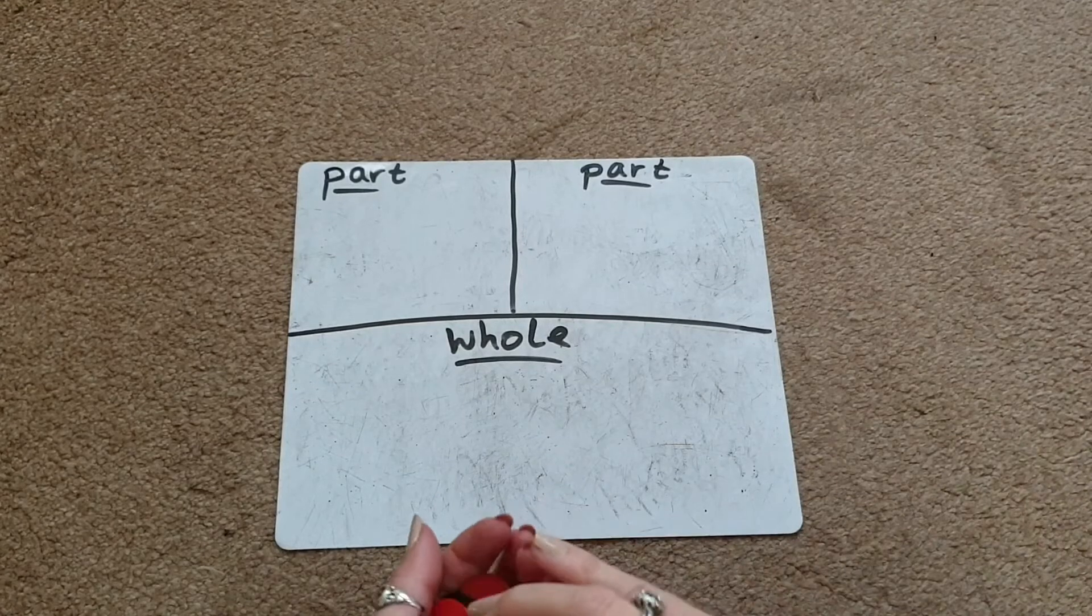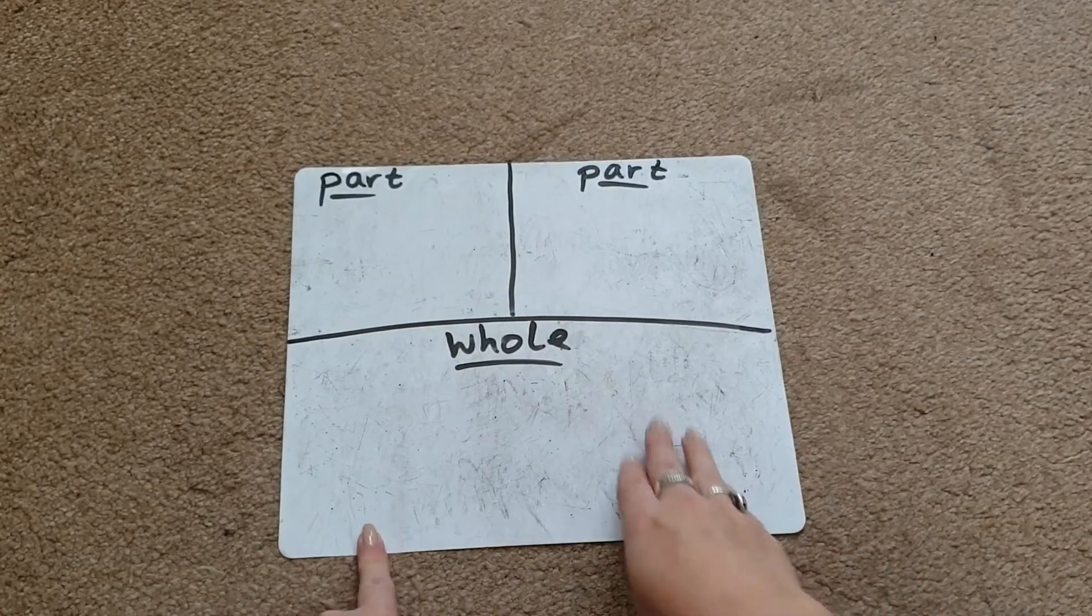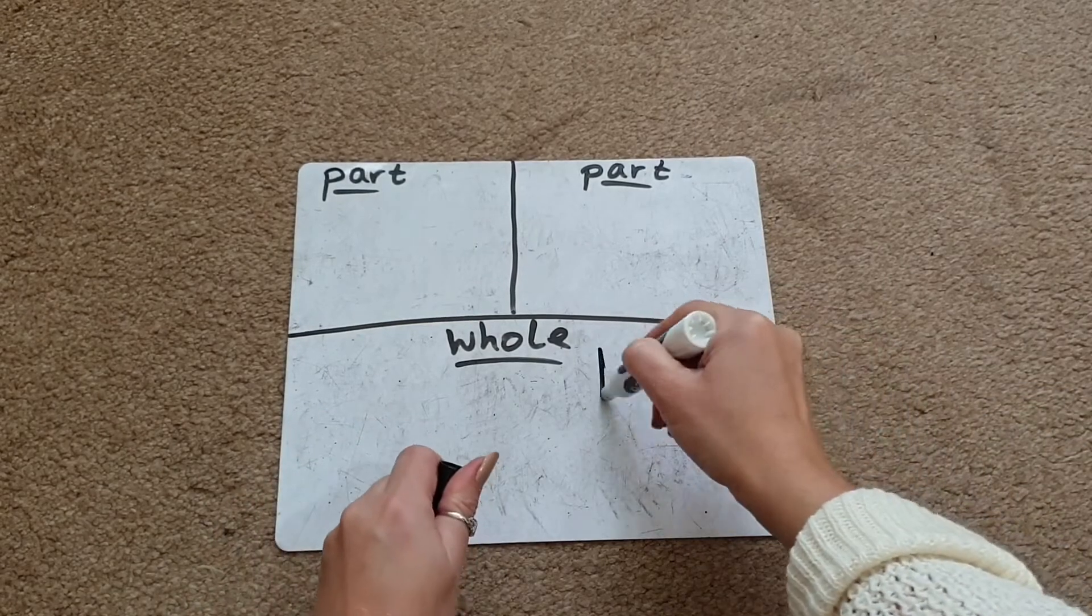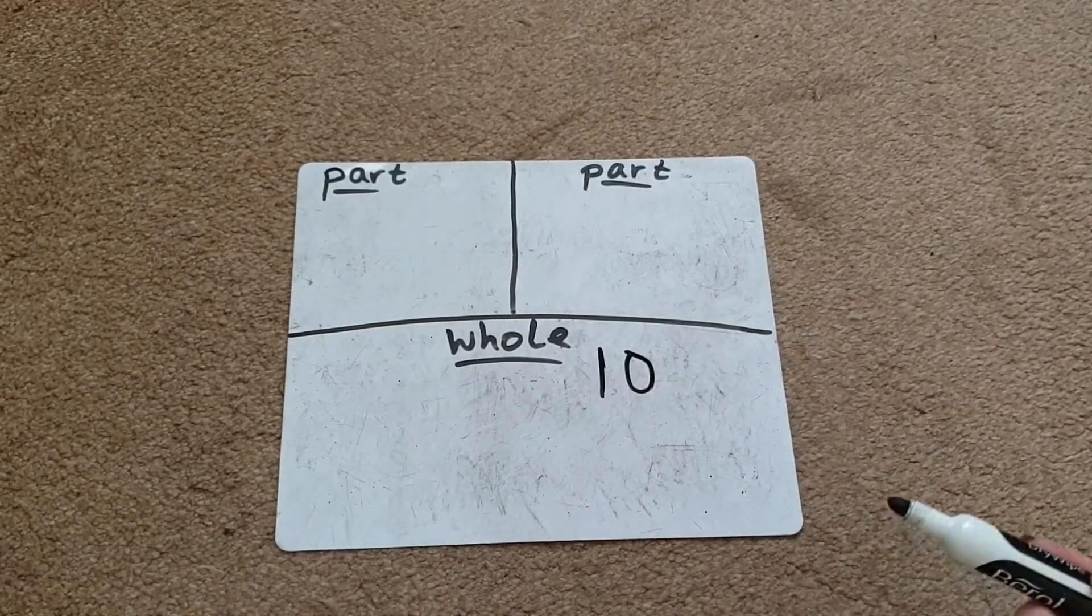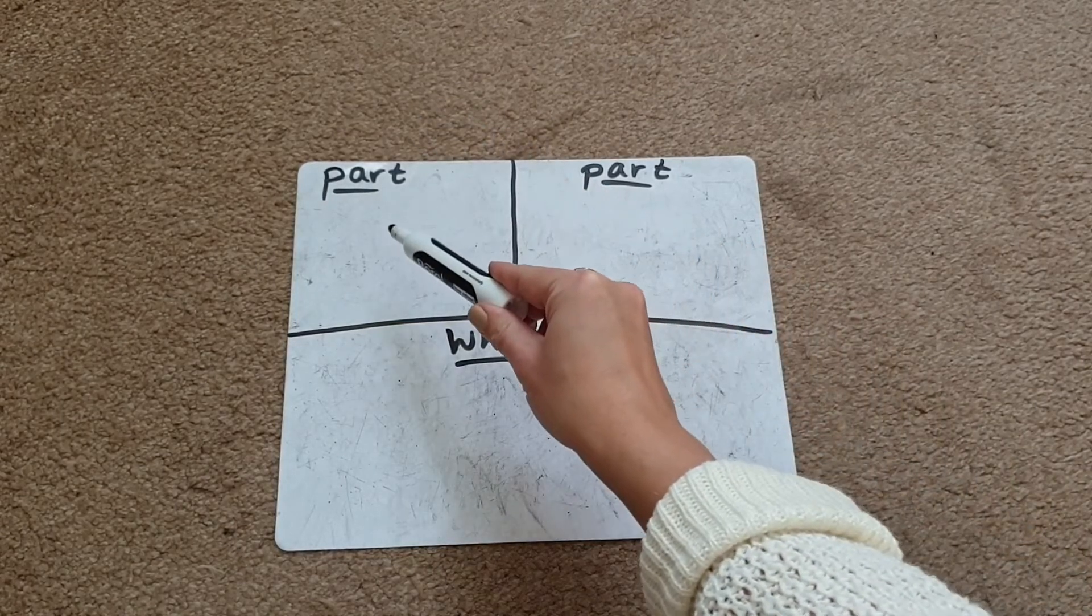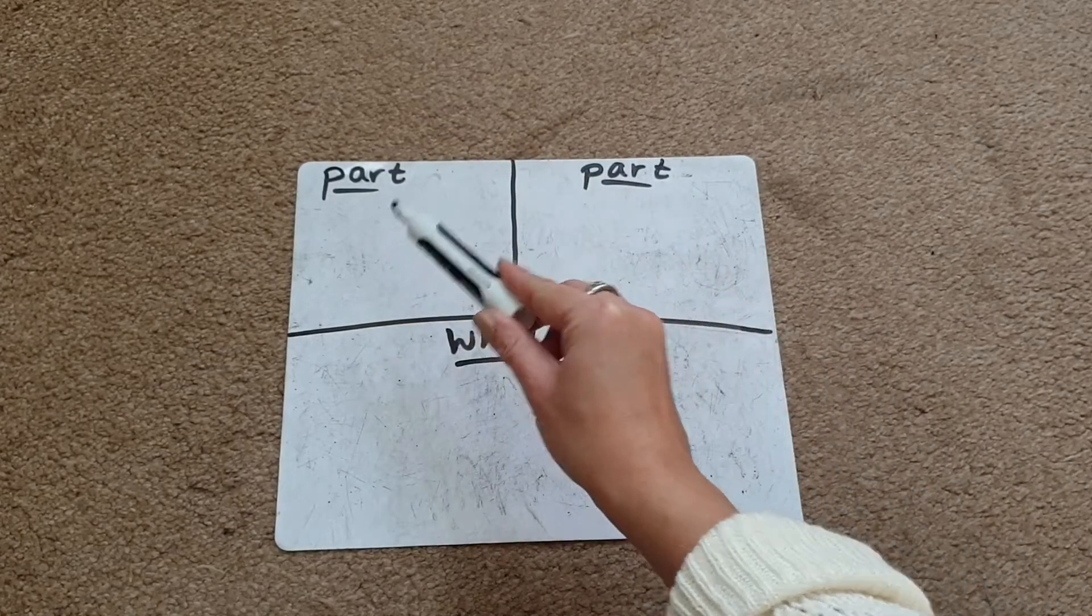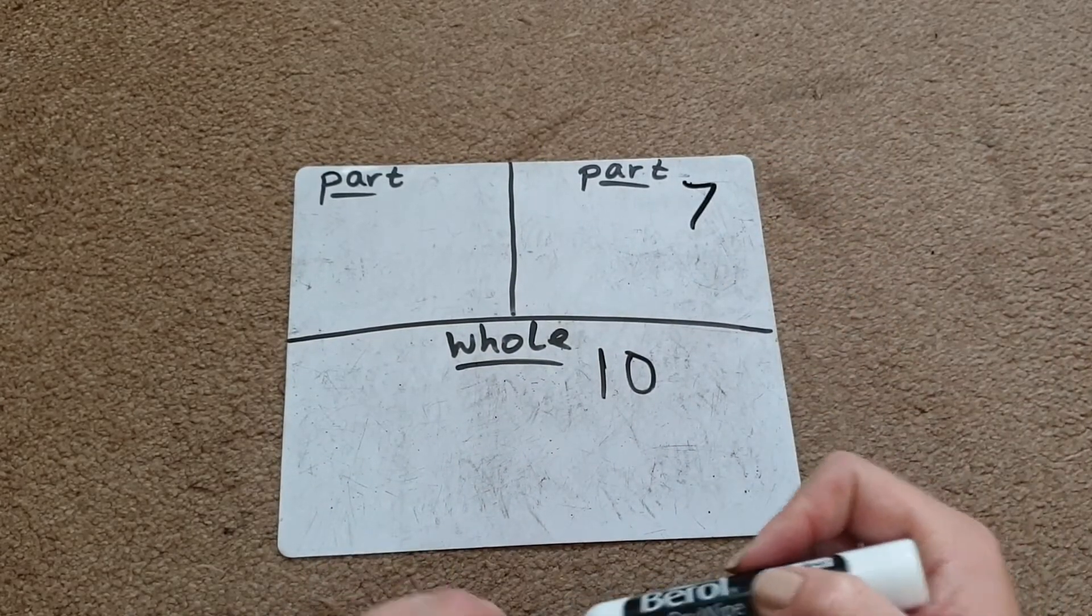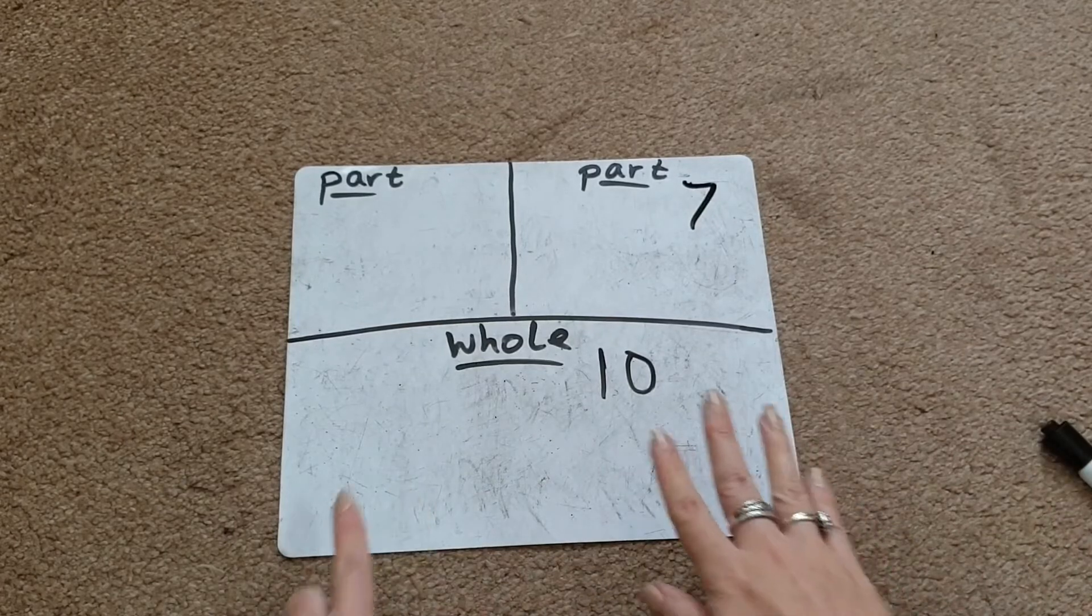What we do first is give a number for our whole part at the bottom. Let's start with the number 10. Then you can put a number in either of the boxes up here. I'm going to put the number 7 up here.